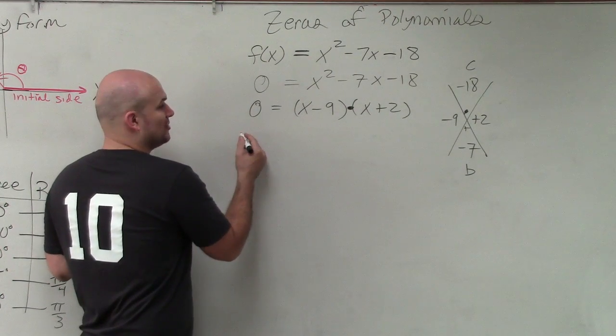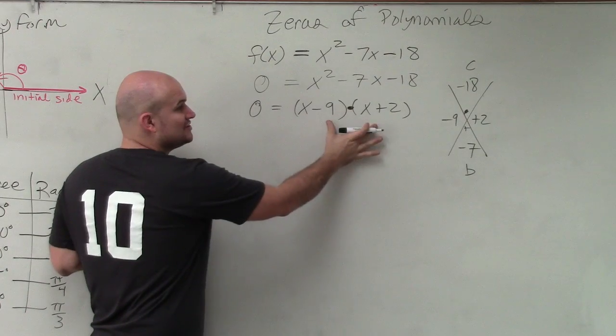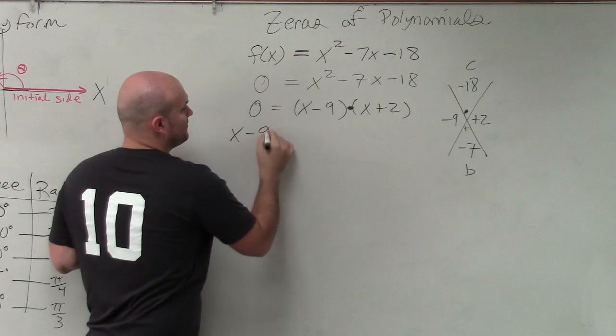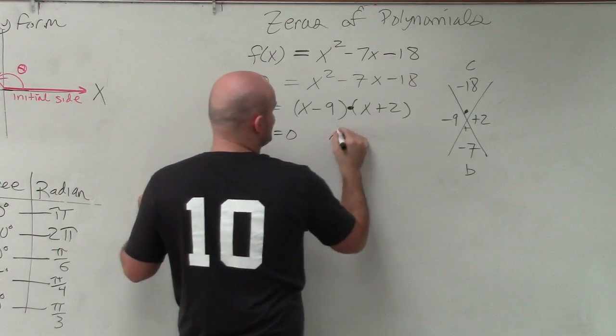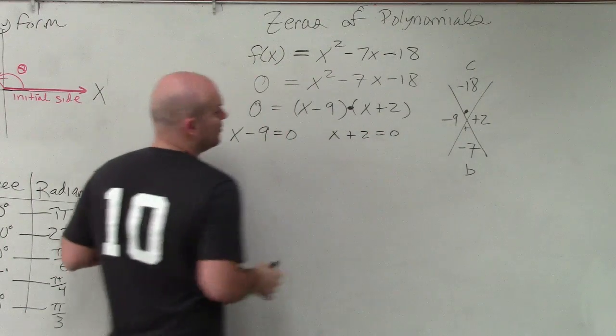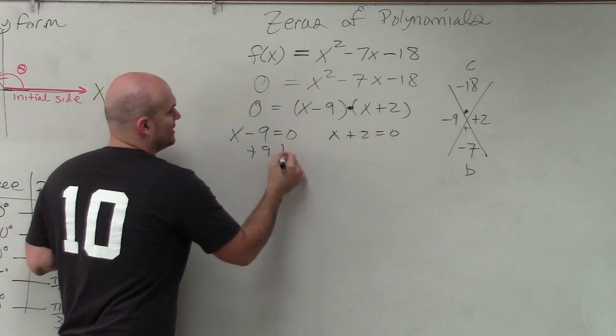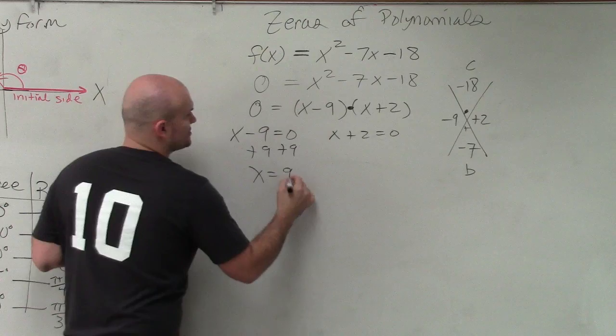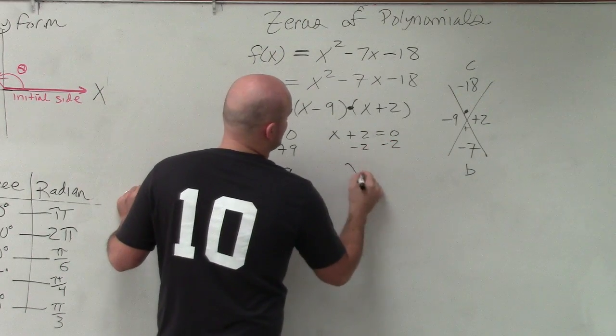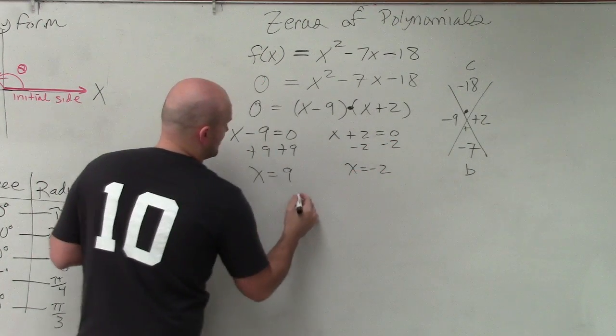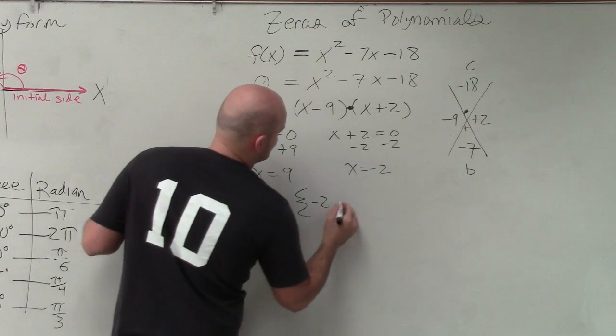Then I can now apply the 0 product property, where if these two multiply to give you 0, then one of them has to equal 0, or both. So therefore, I add 9, add 9. So x equals 9, subtract 2, subtract 2, x equals negative 2. So my solution set is negative 2 comma 9.